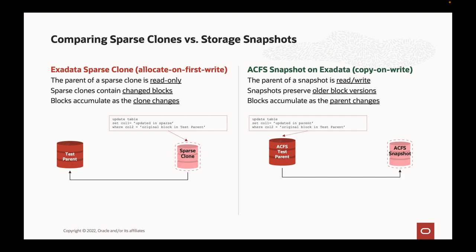Exadata Sparse Clone is what's called an allocate-on-first-write technology. It means we have a fully instantiated parent of that database. That fully instantiated parent or source needs to be read-only — I have to have somewhere I'm always going to be able to refer back to get any block that may not be in the thinly-provisioned database. The Sparse Clones only contain the change blocks, and those blocks accumulate — they're copied from the test parent to the clone as changes are made in the clone itself, bringing across that copy of a block from the parent as changes happen.